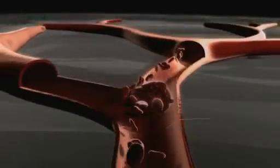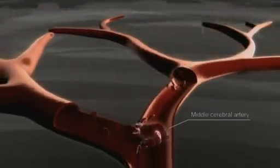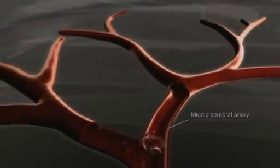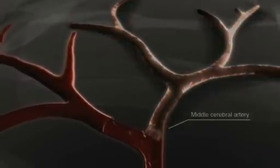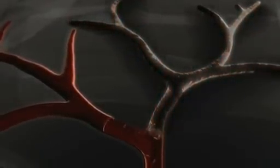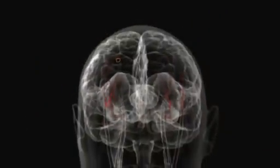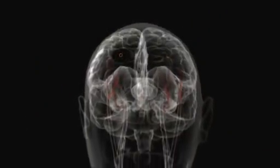The clot, or embolus, can potentially obstruct narrow blood vessels, often the middle cerebral artery or its branches, and prevent the normal flow of blood. The reduced supply of blood and oxygen to a particular part of the brain can result in tissue death, leading to ischemic stroke.